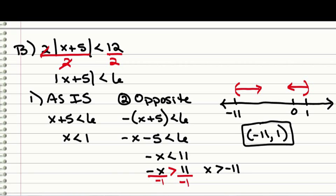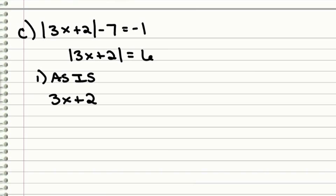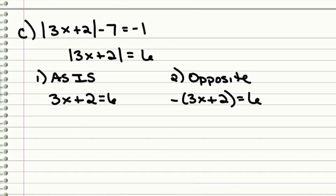So let's do the third one where I believe it was an equation, which it is. Still need to get the absolute value by itself. So let's add 7 to both sides and get equals 6, and then do our two solutions. So the first one is as is. 3x plus 2 equals 6. And the second one would be an opposite, where we have the opposite of the entire 3x plus 2 equals 6. And we distribute the negative.